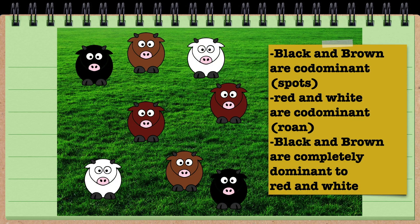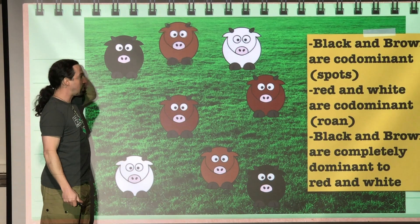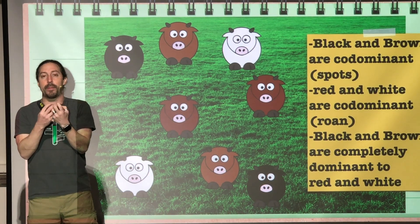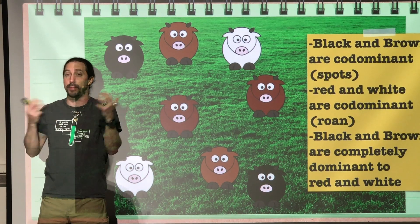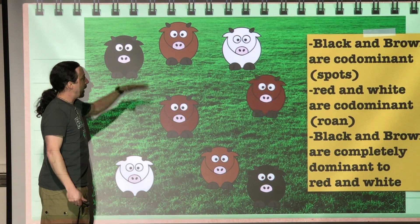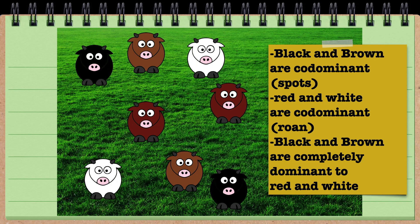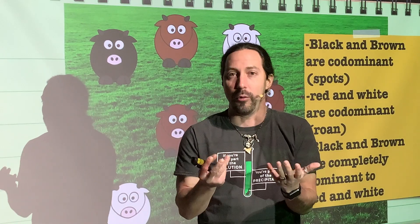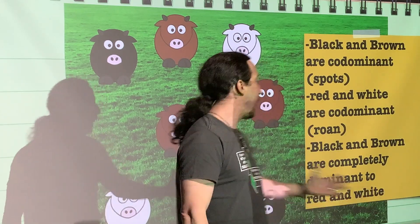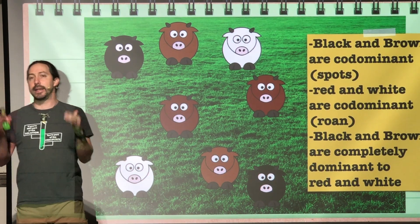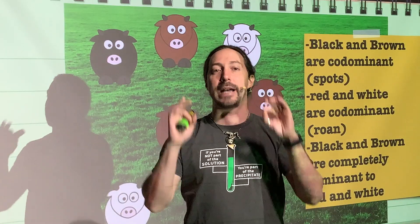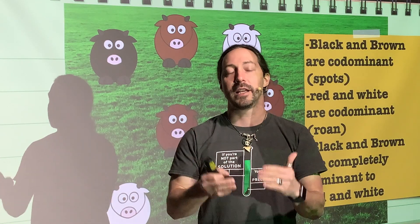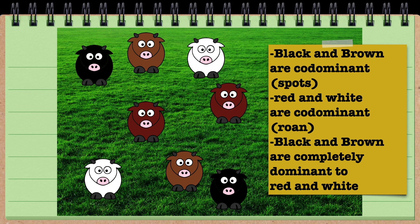We could also do this with cows. We can have black and brown, which are codominant to each other, and when they end up heterozygous, that cow will appear as spots of black and brown. And red and white cows are also going to be codominant to each other, but instead of having spots, they're going to appear what we call roan, which is a really interesting phenotype. The black and brown alleles are completely dominant to the white and red alleles, so white and red are completely recessive to black and brown.